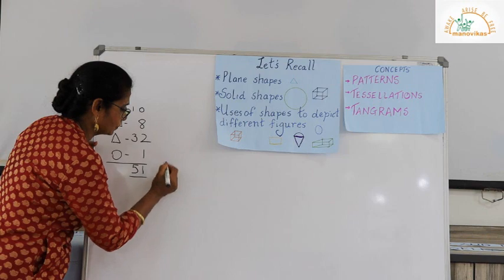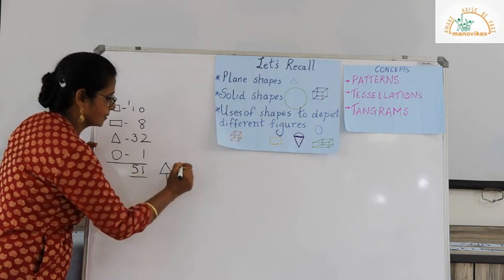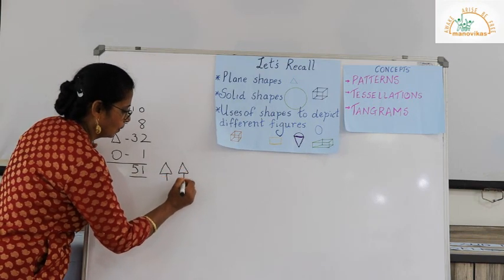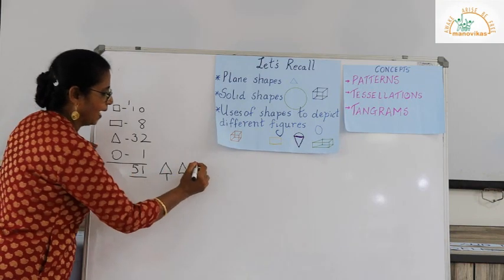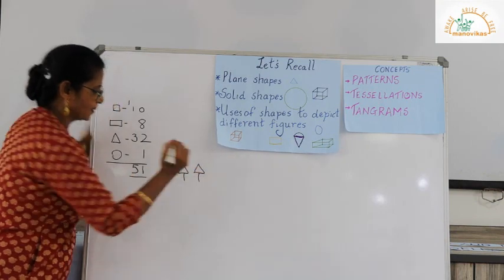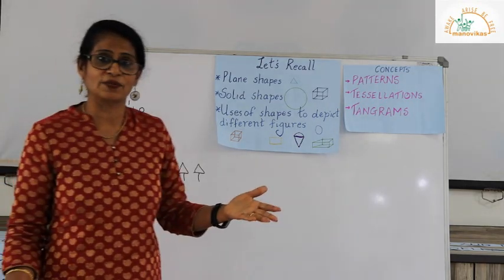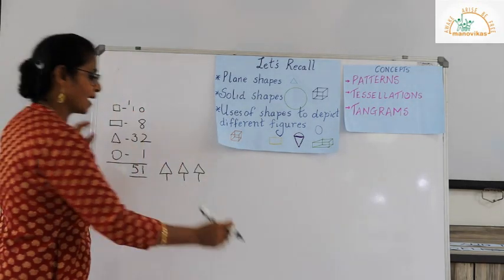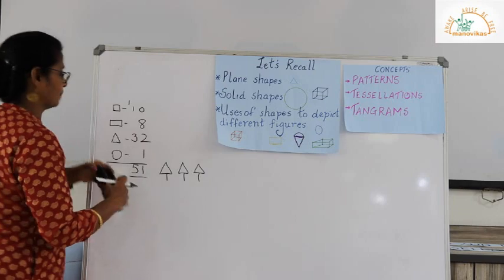For example, if I draw a triangle like this and another one with a straight line, I can form a pattern. Patterns are of two types: growing patterns and repeated patterns.